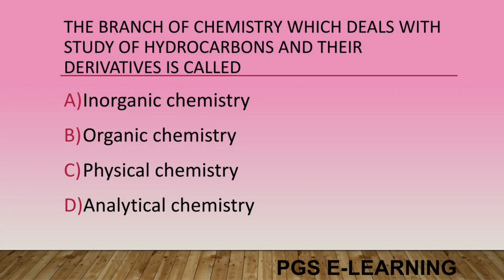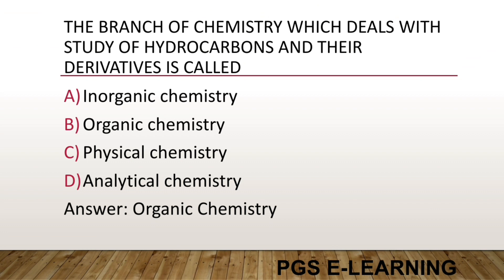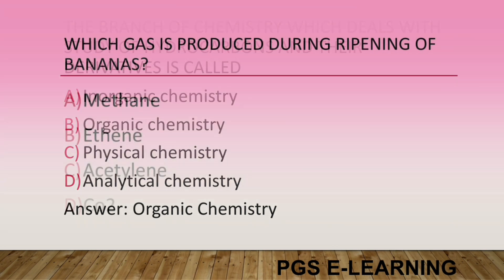The branch of chemistry which deals with the study of hydrocarbons and their derivatives is called: Option A, inorganic chemistry. Option B, organic chemistry. Option C, physical chemistry. Option D, analytical chemistry. Correct answer is organic chemistry.